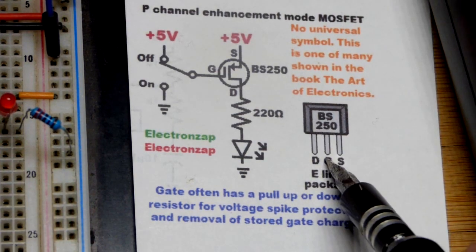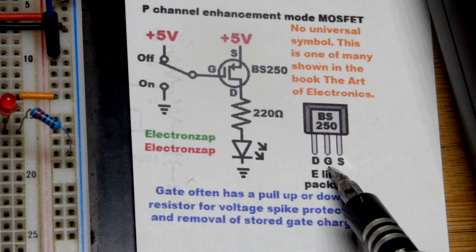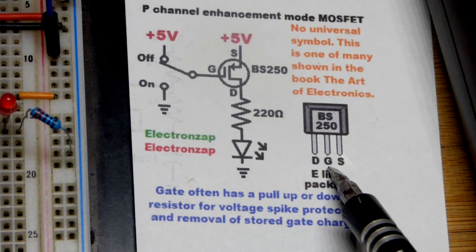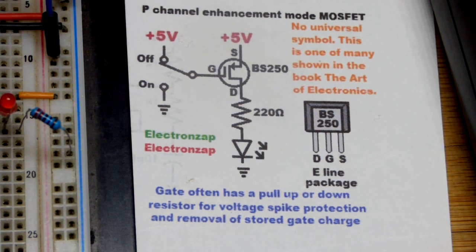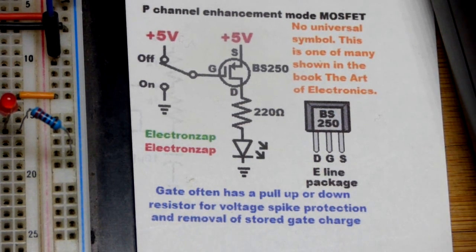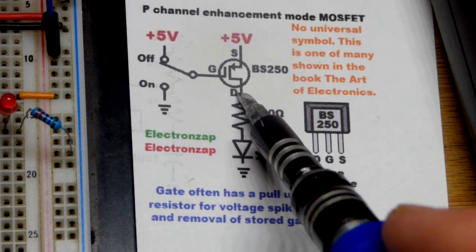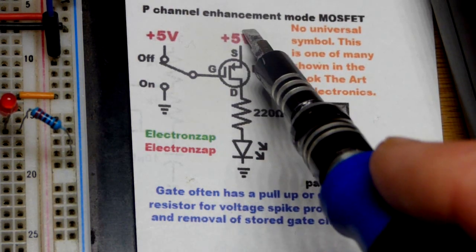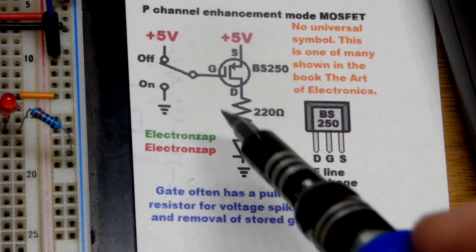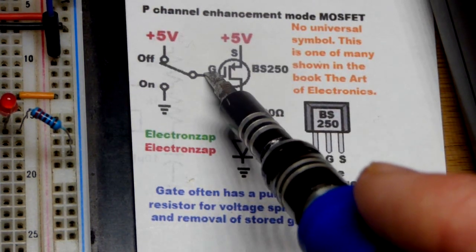But I had to get the E-line package. So that's my pin layout. If you can get them in the TO-92 package, it may have a different pin layout. I do not know. But there you can see the drain is going to where the load is, headed to ground, source to the positive supply right there. So opposite polarities of the N-channel.